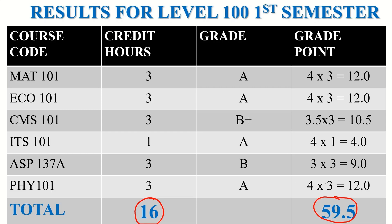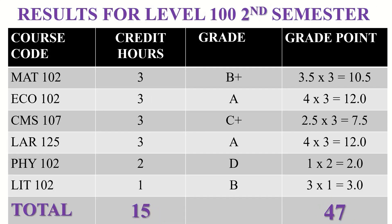This is the result for the same student in Level 100 second semester. In Level 100 second semester, he took another six courses. This time his credit hours was 15, and at the end of the semester he ended up getting a grade point of 47.